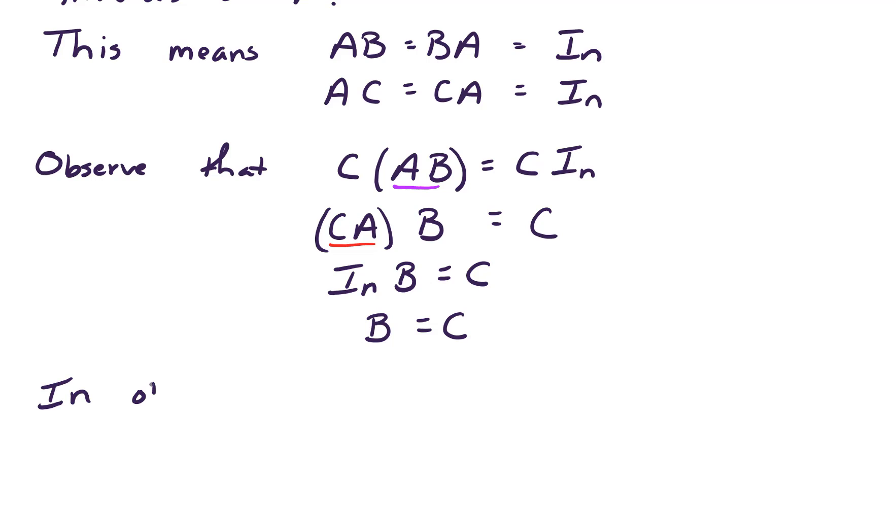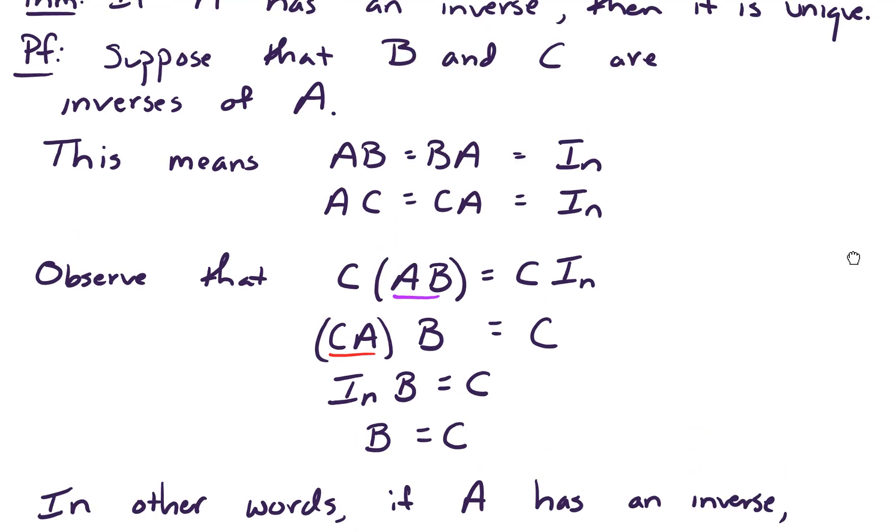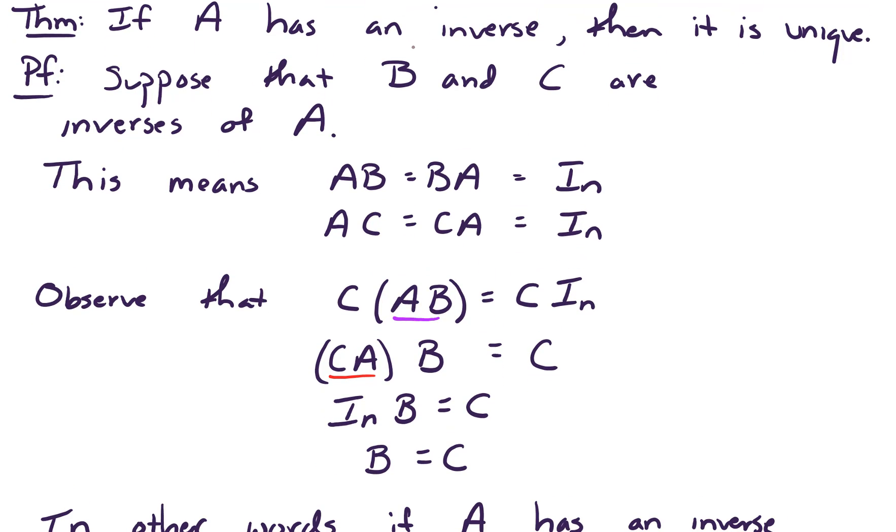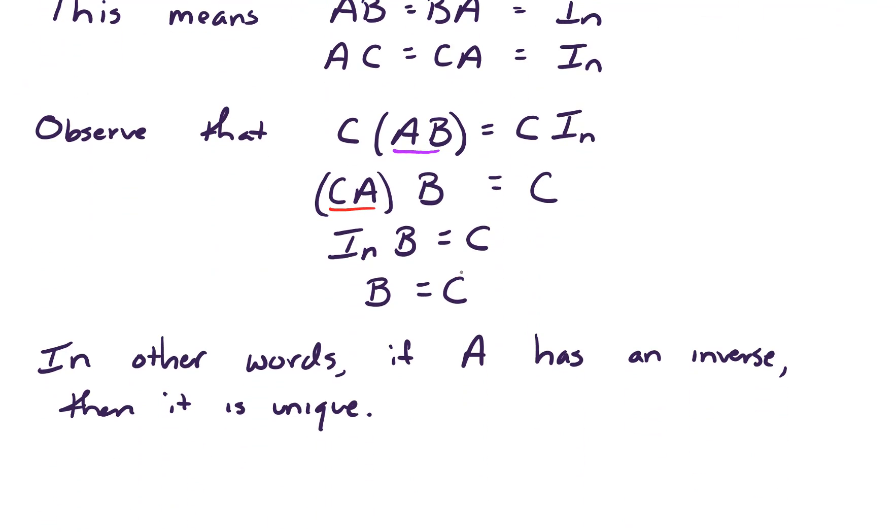In other words, if A has an inverse, then it is unique. We showed that if there were two matrices that acted as inverses B and C, then it must have been the case that B equals C. And hence, the inverse is unique.